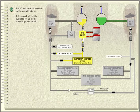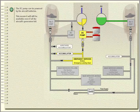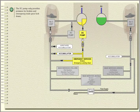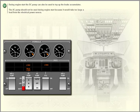The DC pump can be powered by the aircraft batteries. This means it will still be available even if all the aircraft's generators fail. The DC pump only provides pressure for brakes and emergency main gear lockdown. During engine start, the DC pump can also be used to top up the brake accumulator.